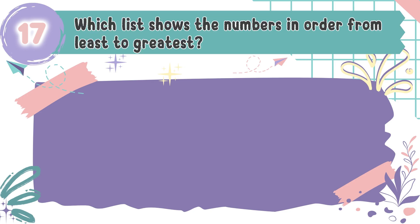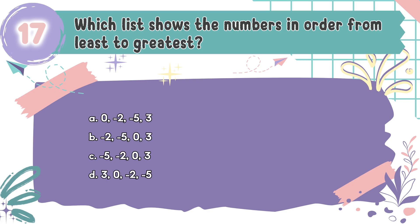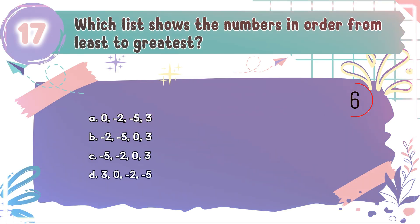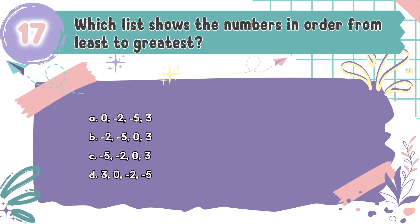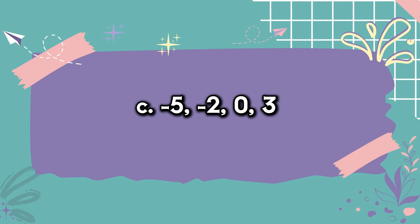Question number 17: Which list shows the numbers in order from least to greatest? The choices are A. 0, negative 2, negative 5, 3; B. Negative 2, negative 5, 0, 3; C. Negative 5, negative 2, 0, 3; D. 3, 0, negative 2, negative 5. The correct answer is C: negative 5, negative 2, 0, 3. The correct order starts with the most negative number, negative 5, and moves to the largest positive number, 3.